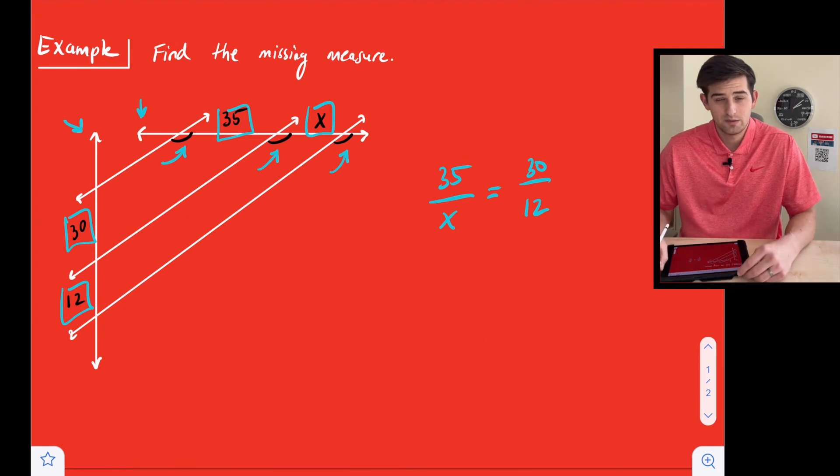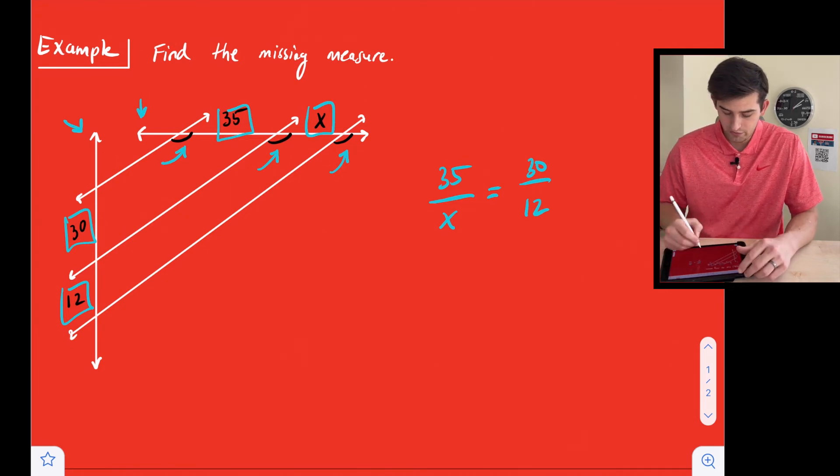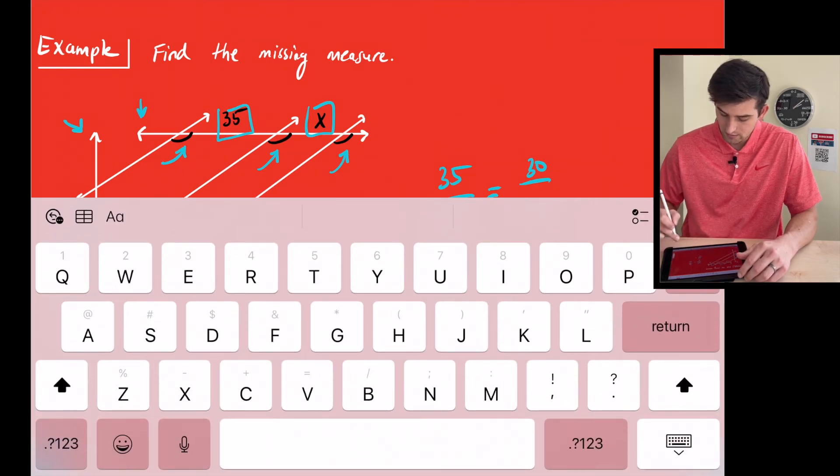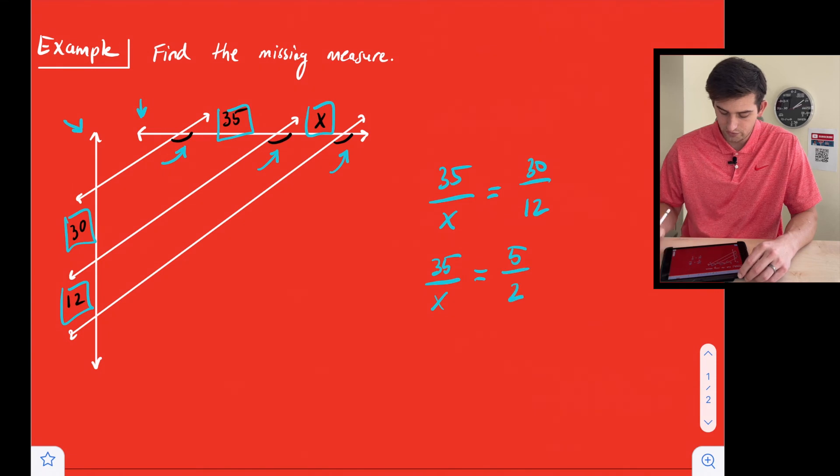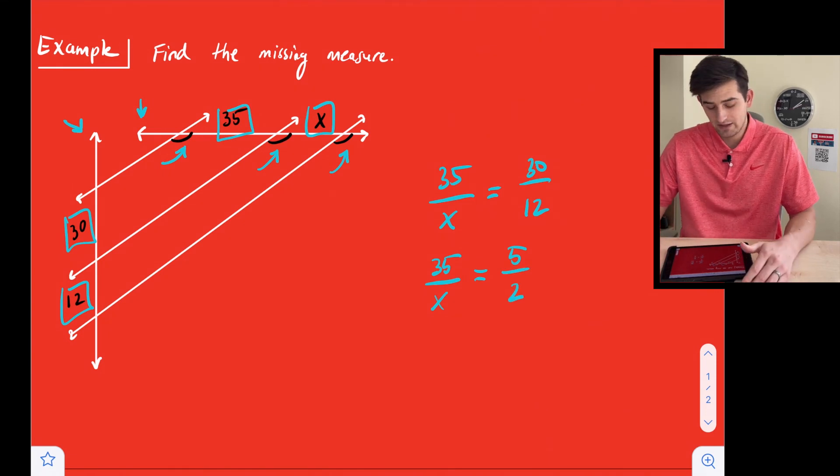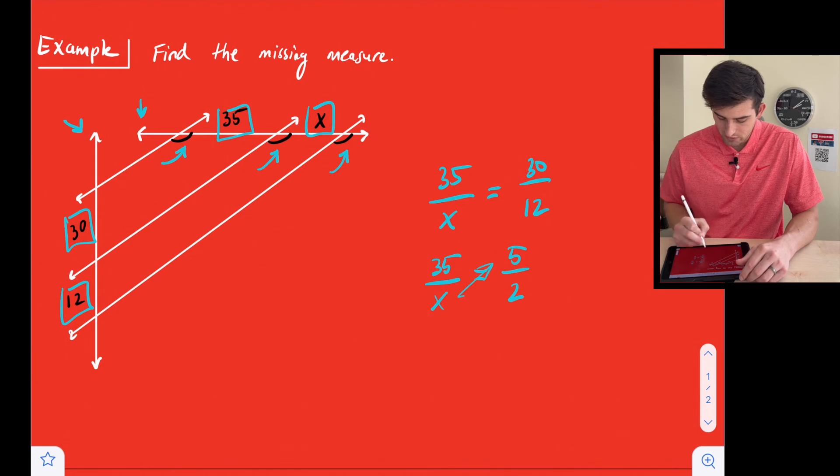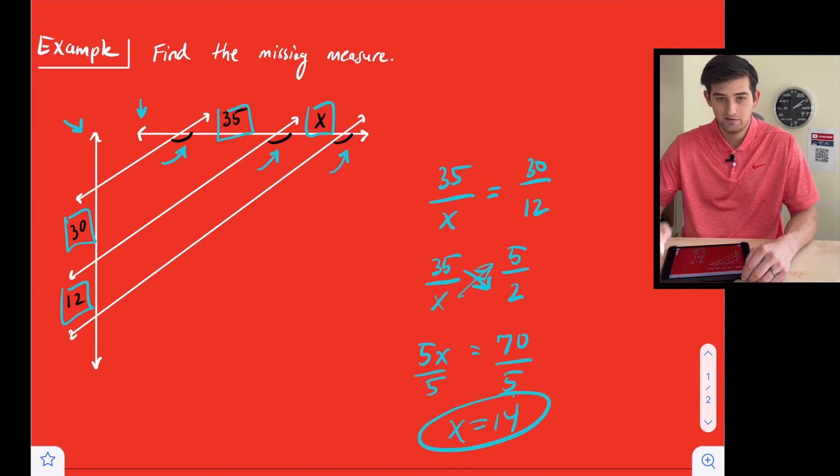Okay, so now we can go ahead and cross multiply, but we can simplify 30 over 12 to make the math a little easier for us. So 35 over X, and let's say 5 over 2. We divide 30 by 6, we get 5 and 12 divided by 6 is 2. Now we can cross multiply. So 5 times X is 5X and 35 times 2 would be 70. Divide both sides by 5 and we find our missing measure to be 14. And that is the Three Parallel Lines Theorem.